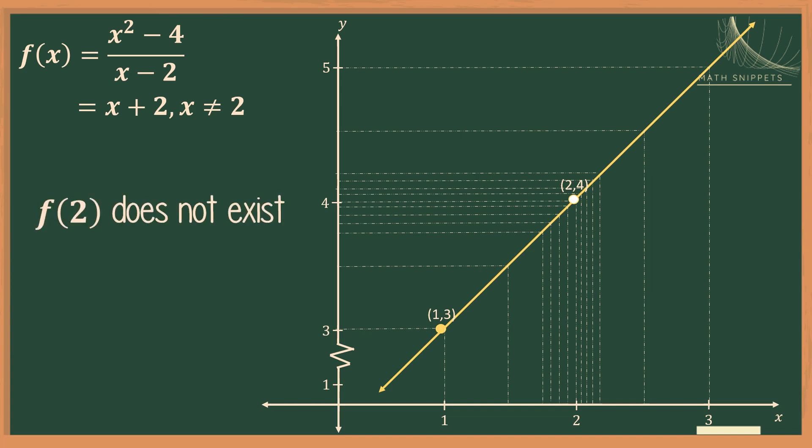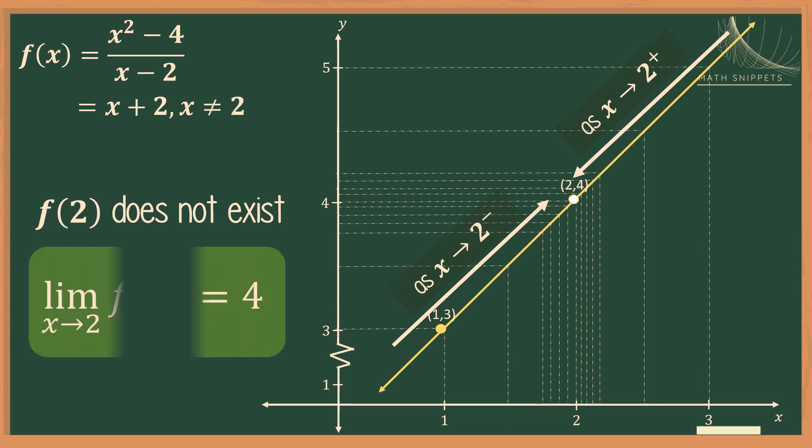Now, f of 2 does not exist, meaning the function value of 2 does not exist. But, the left-hand and the right-hand limit exist, and they are both equal to 4. So, therefore, we say that the limit of the function as x approaches 2 is equal to 4.